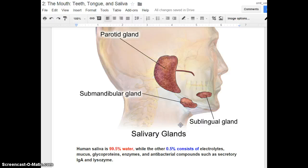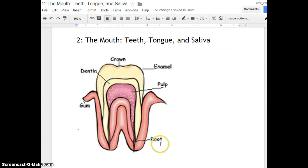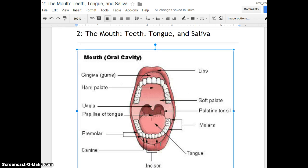Saliva digests food because it chemically dissolves food. However, teeth digest food because they mechanically break and chomp and tear and move the food.